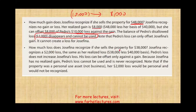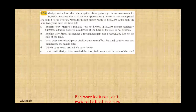If Josefina sells the property for $38,000 — well below her $40,000 basis — Josefina recognizes a $2,000 loss, the same as her realized loss. Pedro's loss does not increase Josefina's loss; his loss can only be used to offset a gain. Since Josefina has no realized gain, Pedro's loss cannot be used and is never recognized. Note that if the property were personal use property, her $2,000 loss would also not be recognized.